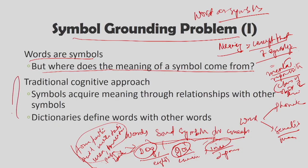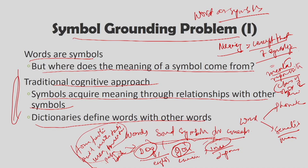There are several approaches to the symbol grounding problem. The traditional cognitive approach says symbols acquire meaning through their relationships with other symbols. One symbol when expressed relates to another symbol, and that is how they acquire meaning. They gave the example of a dictionary: when you look up any word, it is defined in terms of other words. When one symbol is defined in terms of other symbols, that is how symbols attain meaning. But there is a problem with this approach, as demonstrated by John Searle.